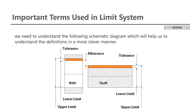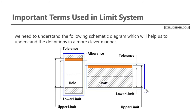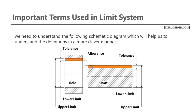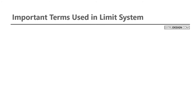We need to understand the following schematic diagram which helps us understand these definitions more clearly. This is the hole and this is the shaft. We have deviations in each component — these deviations are called tolerance. For the shaft there will be a lower limit and upper limit for the shaft diameter, and similarly we will have lower limit and upper limit for the hole.